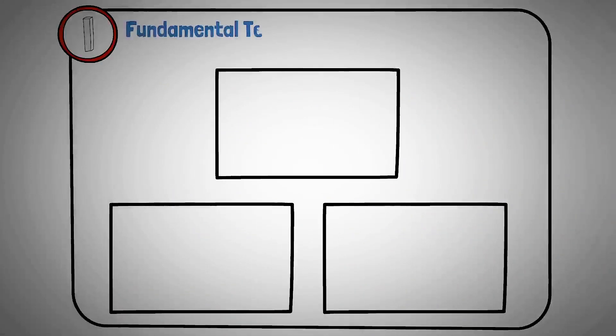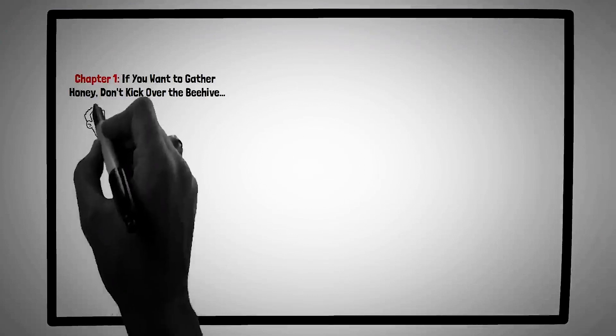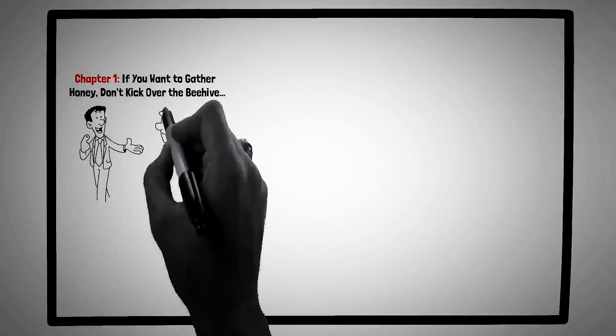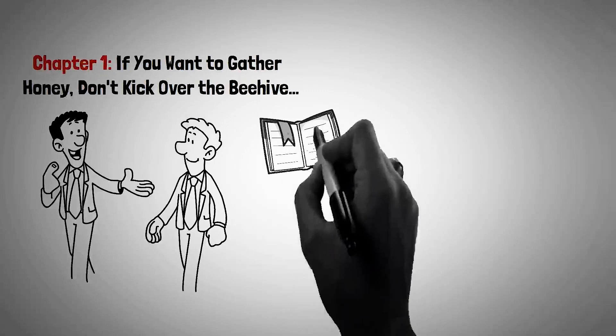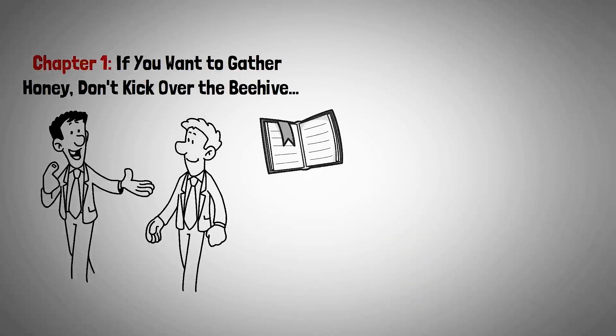Part one: fundamental techniques in handling people. Chapter one, if you want to gather honey, don't kick over the beehive. In our daily interactions, it's easy to fall into the trap of pointing out mistakes, condemning actions, or complaining about circumstances. However, in the first chapter, there's a compelling argument against these behaviors, emphasizing the power of understanding and empathy.